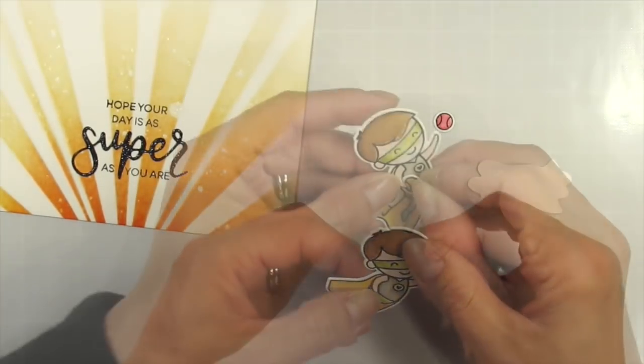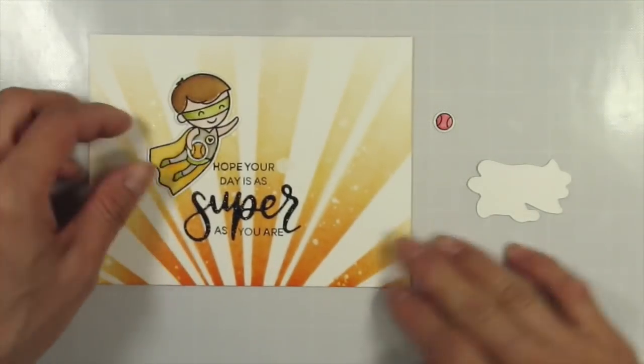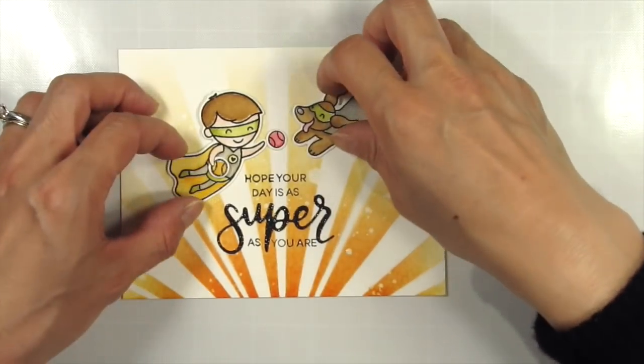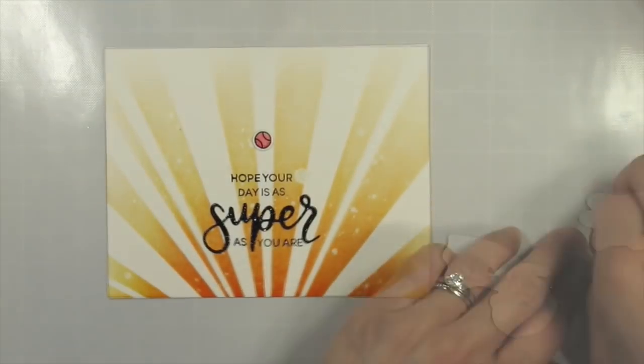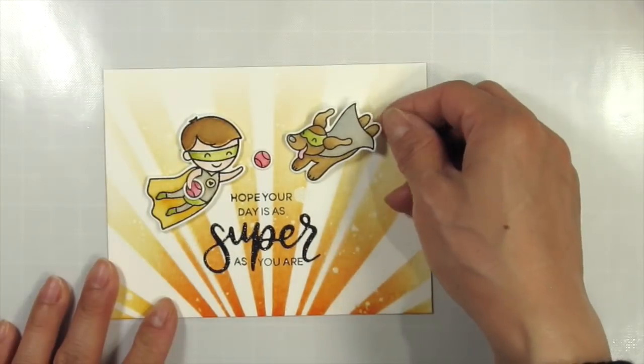When I started applying foam tape to the back of this super dude I noticed that his arm is also die cut which is really cute. He could carry anything so I decided to tuck a second ball under his arm. Originally I was going to have the throwing ball in the boy's hand but then I thought it looked cuter already thrown towards the dog who's flying to get it.